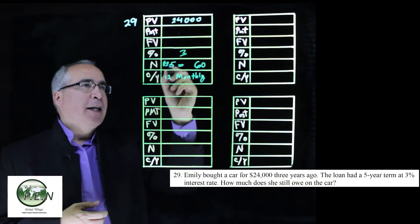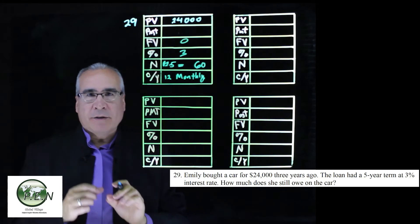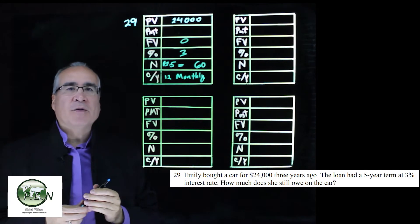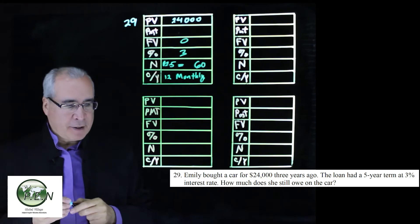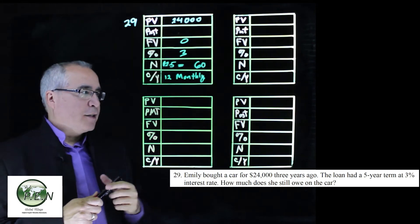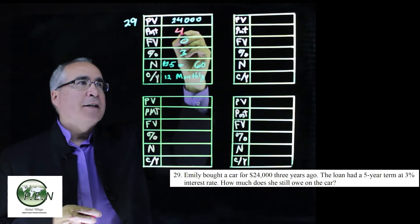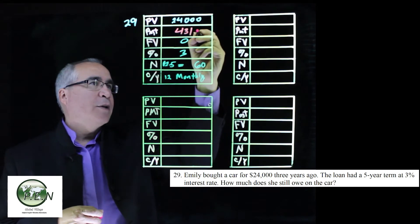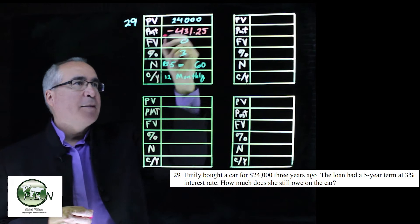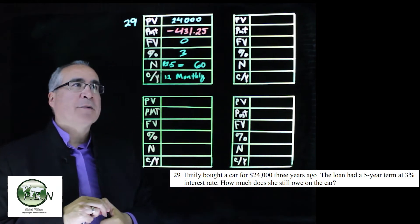3% interest. And at the beginning, when they do the calculations, they would have been projecting a future value of zero at the end of five years. So we click on the button, and this is going to tell us what her payment should have been or is, $431.25. It comes up negative because that's money she has to pay each month. It goes away from her.